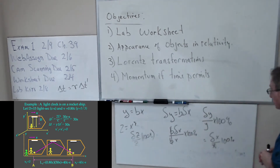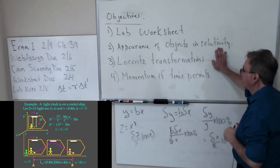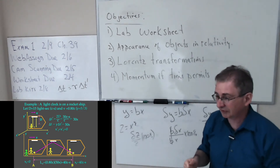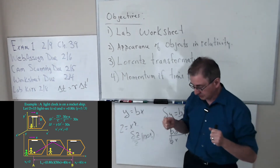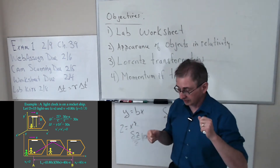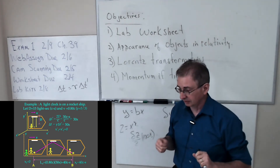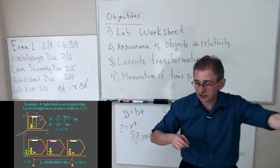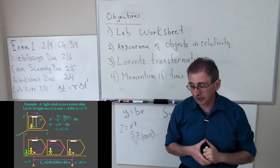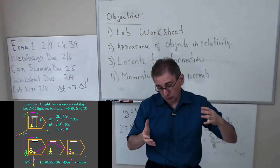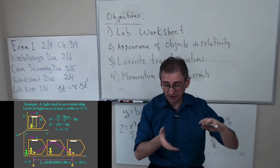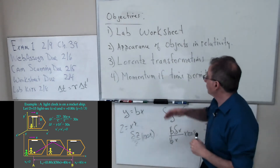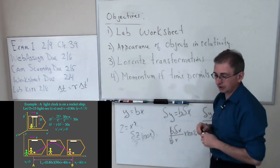I was talking about the appearance of objects in relativity, and we physicists have to be careful because we like to use the word 'appear,' but in relativity it's a tough thing. When you look at something moving very fast, there's a certain period of time it takes for light to go from the object to your eye — the distance you are from the object divided by the speed of light. If we talk about a cube going by us at very high speed, a careful analysis shows the object will actually appear rotated rather than shortened.